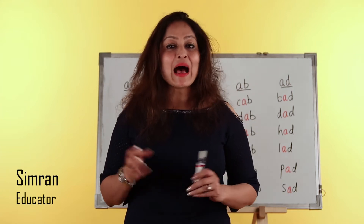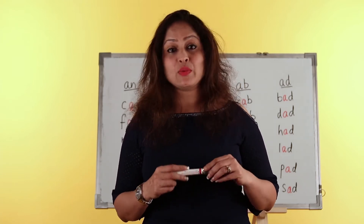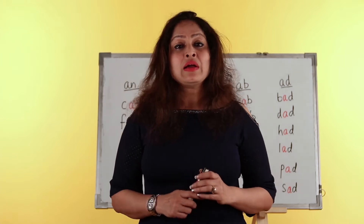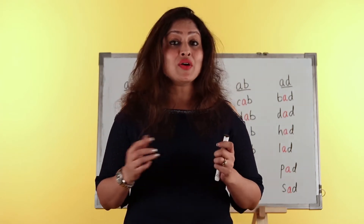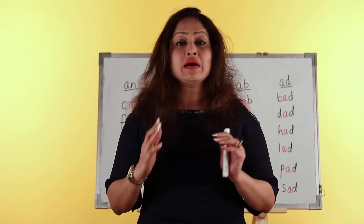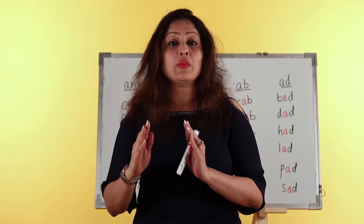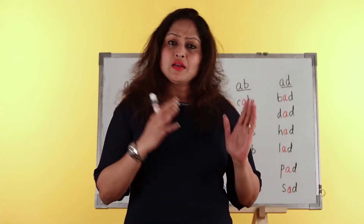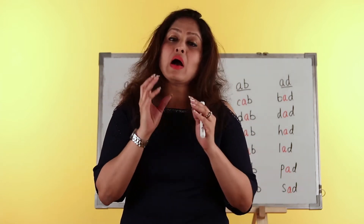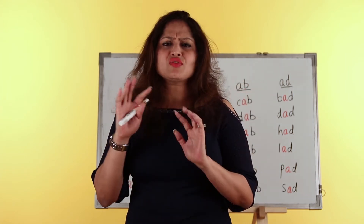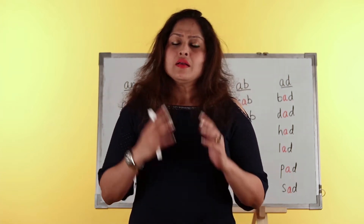Hi, welcome to Symphonics! I'm Simran, and I'm back with a new lesson in phonics. Today we are going to learn how to read three letter words. We have learned that there are five special letters in the alphabet called the vowels, and all the other letters are called the consonants. Today we are going to learn three letter words which follow a pattern called the consonant vowel consonant pattern, also called the CVC pattern.